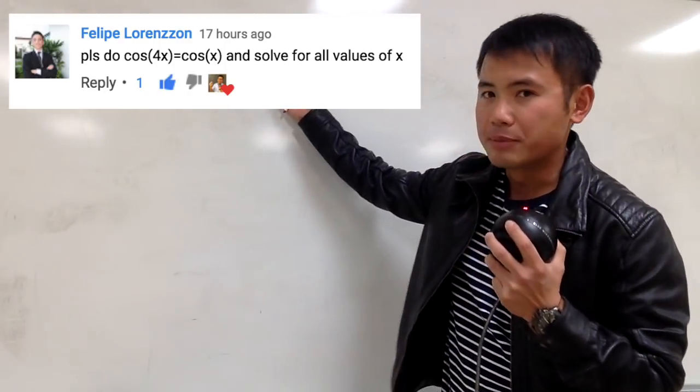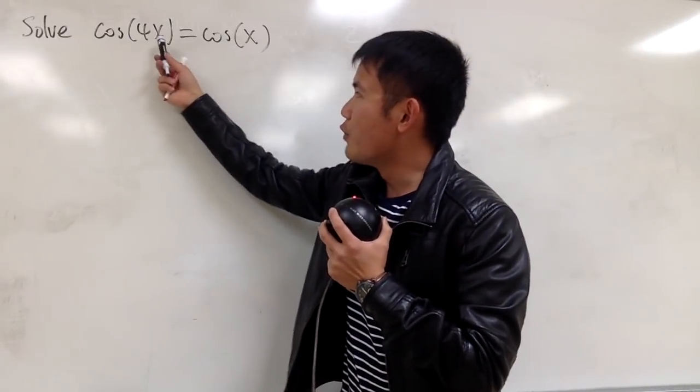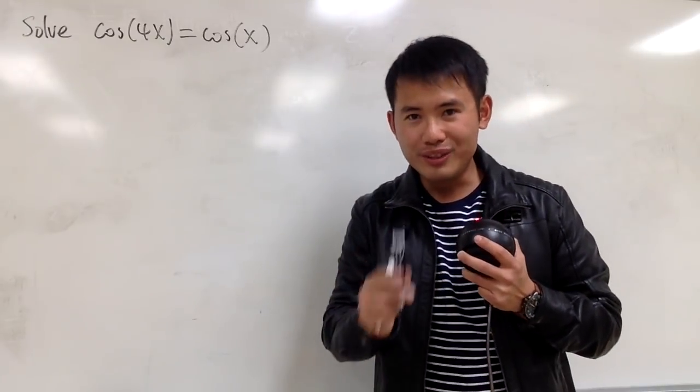Okay, that's just some fun, and this is for one of my subscribers. We are going to solve cosine of 4x equals cosine of x, and don't do this.